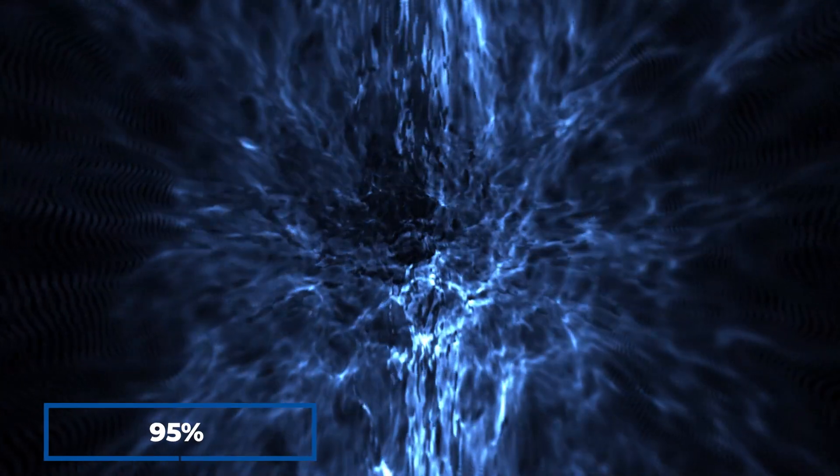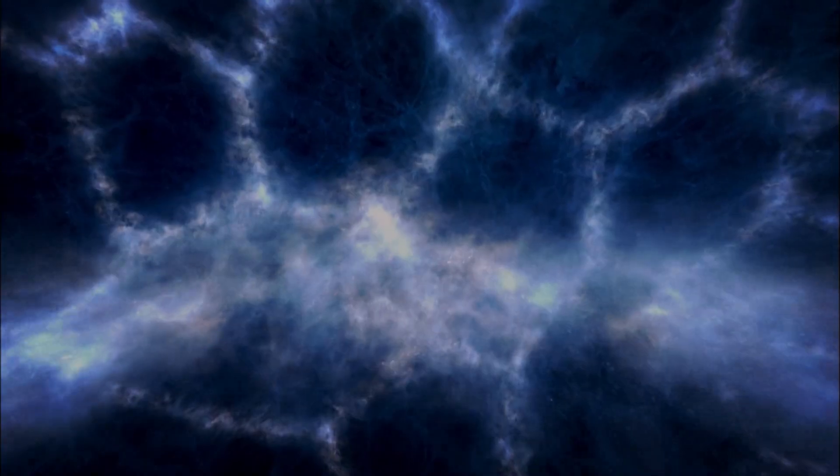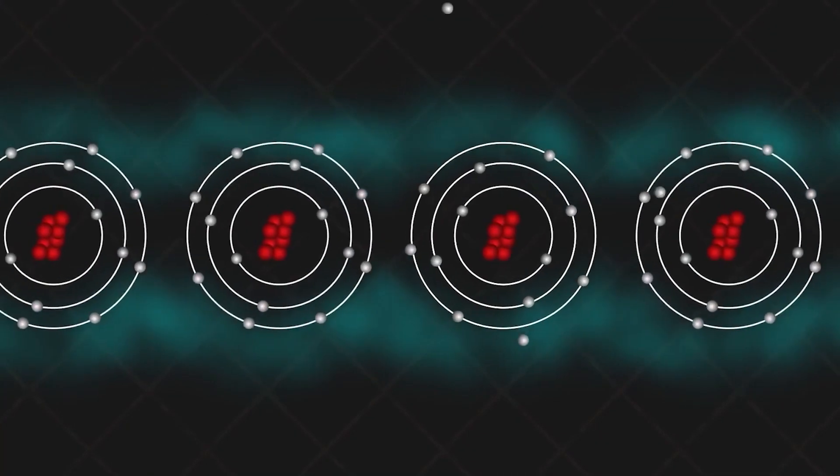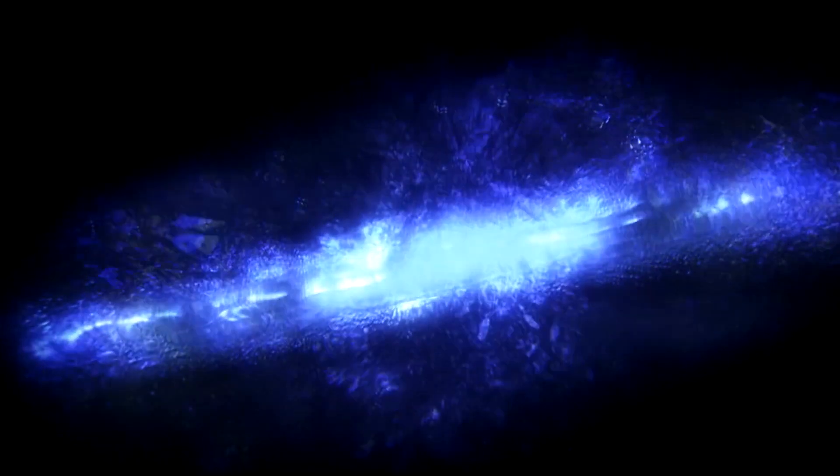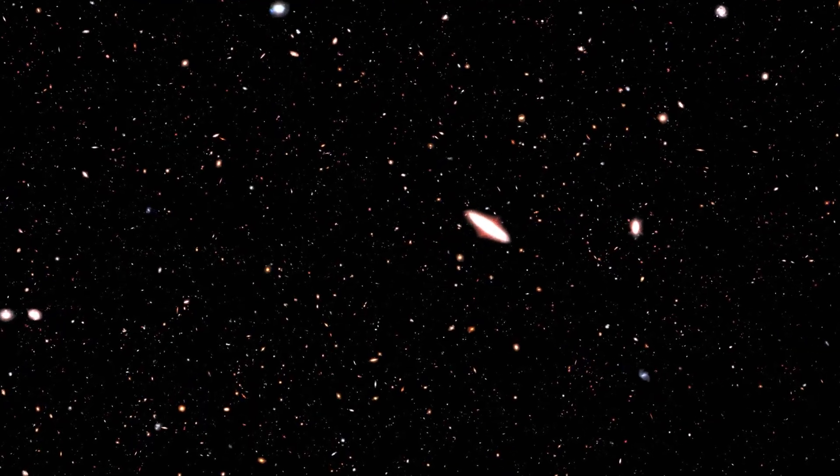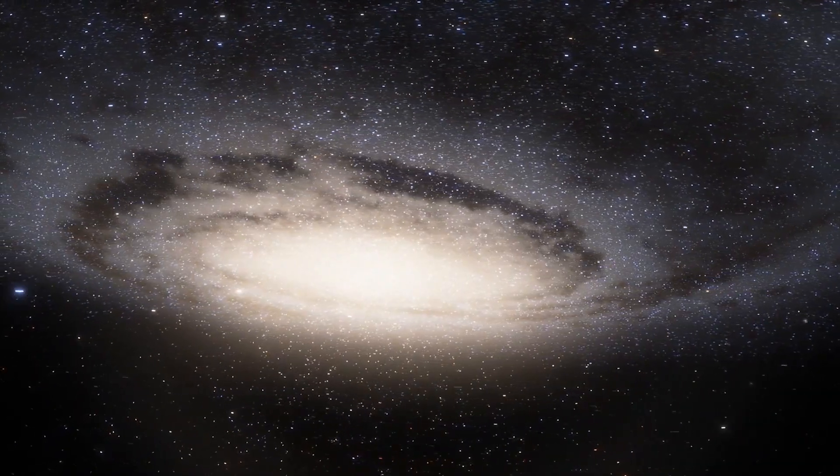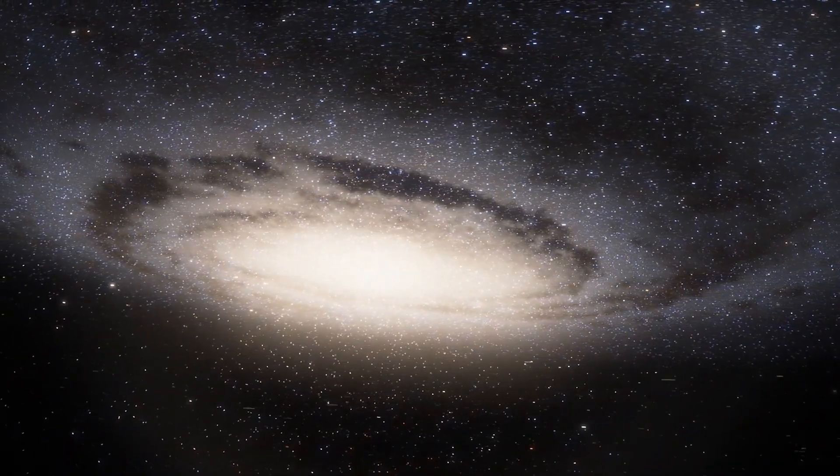The remaining 95% is comprised of an elusive substance known as dark matter. Dark matter behaves like a phantom, an unseen force that pervades the universe. Its elusive nature stems from its lack of interaction with the electromagnetic force, rendering it incapable of absorbing, reflecting or emitting light. However, it exerts a significant gravitational influence on visible matter, playing a crucial role in the cohesion and motion of galaxies.